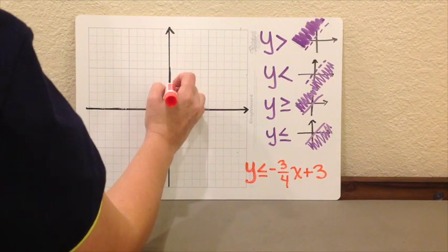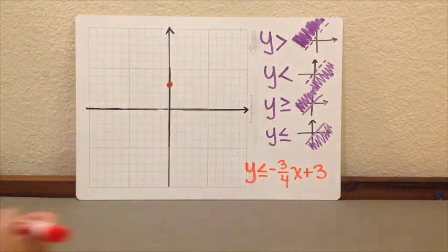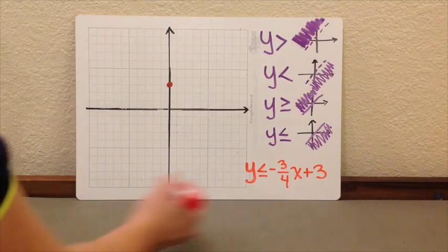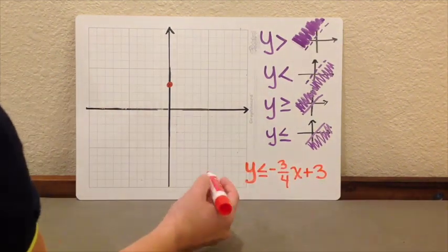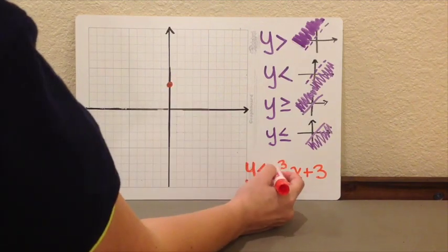1, 2, 3. We always start in the y-axis. That's my starting point. And now I follow the movement, the slope. Negative 3 over 4. Meaning that I am going to go down 3 units.